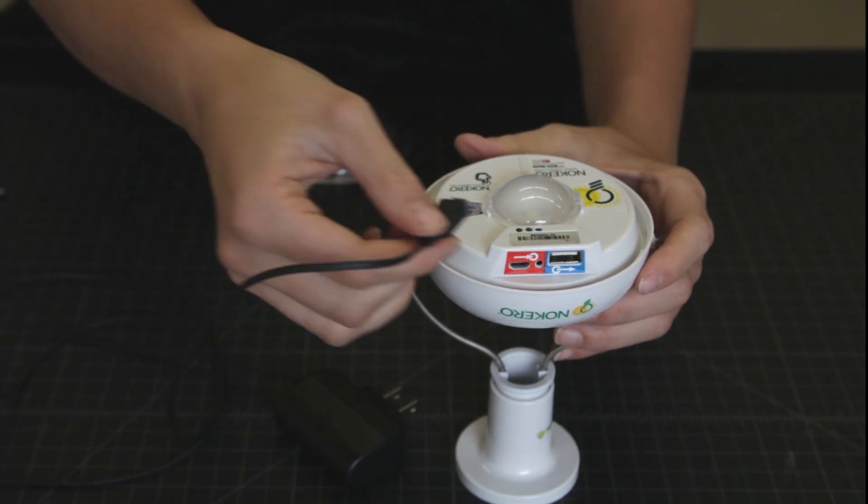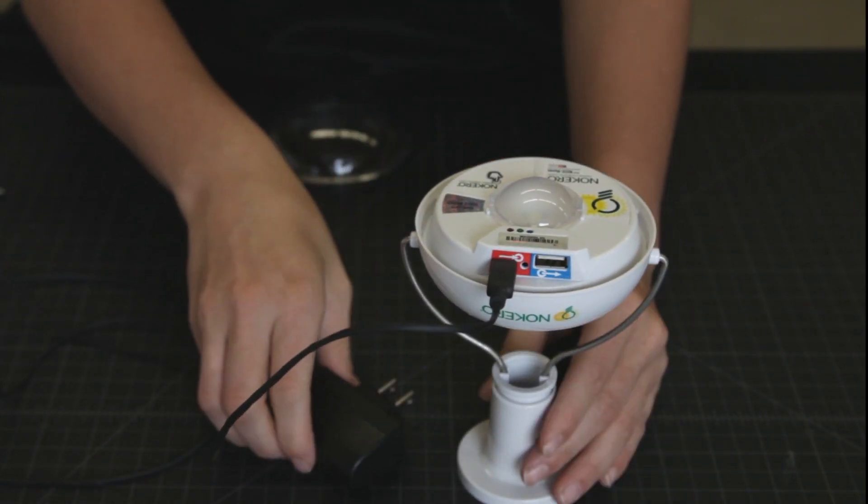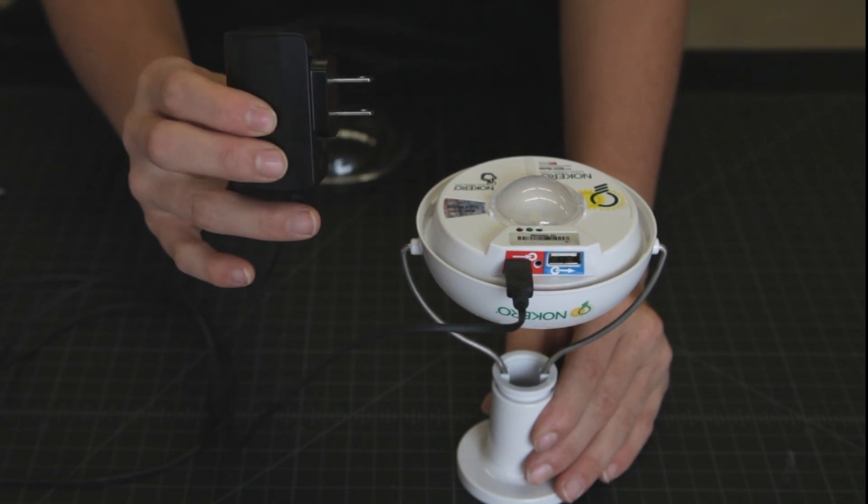If the sun isn't strong, and if grid power is available, these charging ports can be used to charge the Huron's battery.